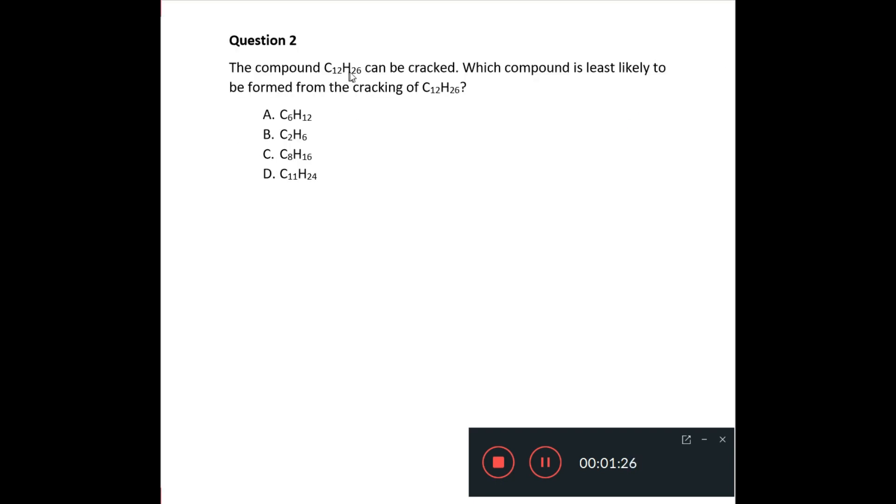Let's say compound C12H26 can be cracked. Which compound is least likely to be formed from the cracking of C12H26? Now when you crack a hydrocarbon you usually get smaller hydrocarbons and you can also get hydrogen as well. So you tend to get an alkene and an alkane. But you can also get hydrogen and not get an alkane.